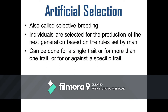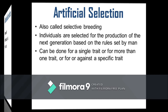Artificial selection or selective breeding occurs when individuals are selected for the production of the next generation based on the rules set by man. This means that human intervention is involved in the process of selecting which individuals would be allowed to survive and reproduce. Artificial selection can be done for a single trait or more than one trait, or in favor of or against a specific trait.